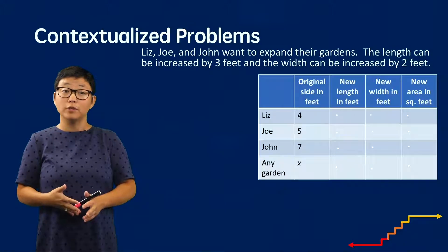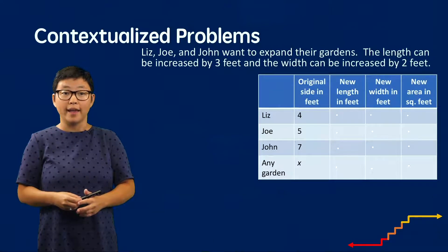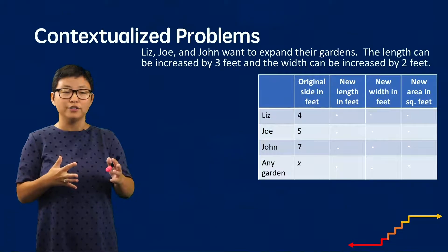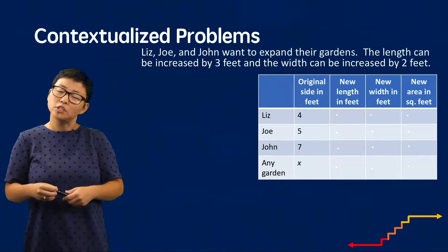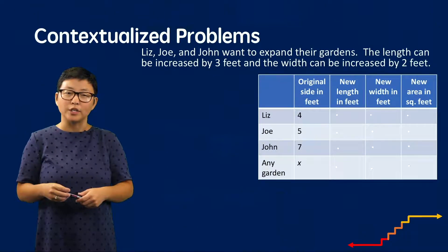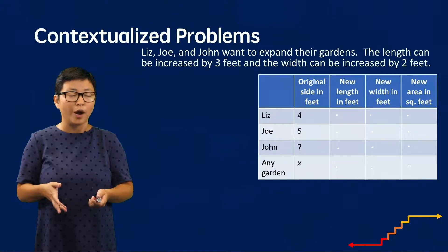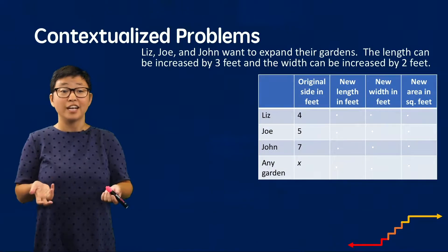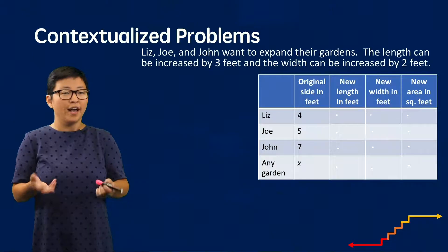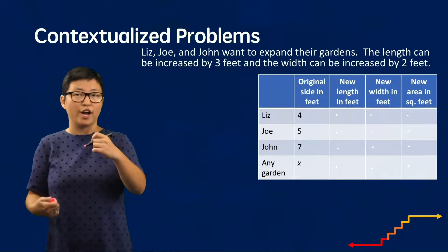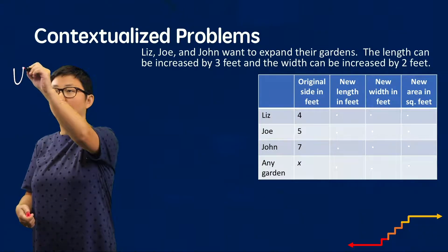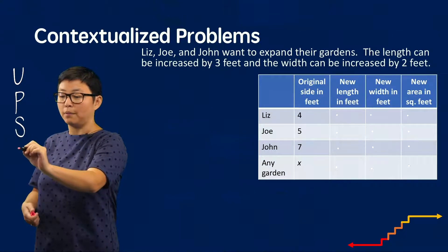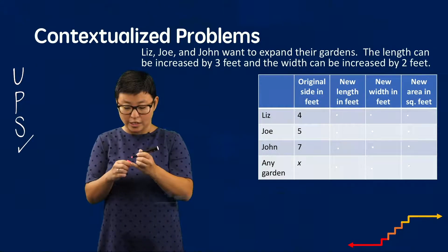Now that students are comfortable using a graphic organizer, it may be time for them to move on to solving problems where they multiply linear expressions that come from contextualized word problems. Before we look at this problem, it's important to think of an attack strategy. The one we're going to use today is called UPS Check, which stands for: understand the problem, make a plan, solve the problem, and then check to see if your answer is reasonable.